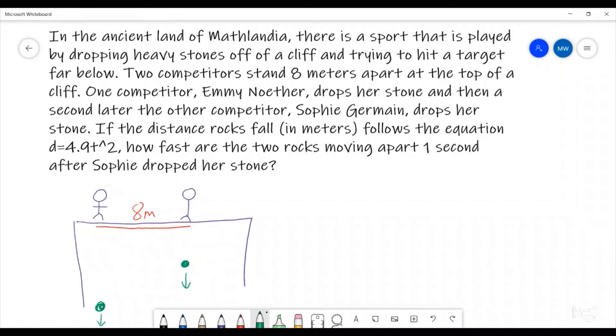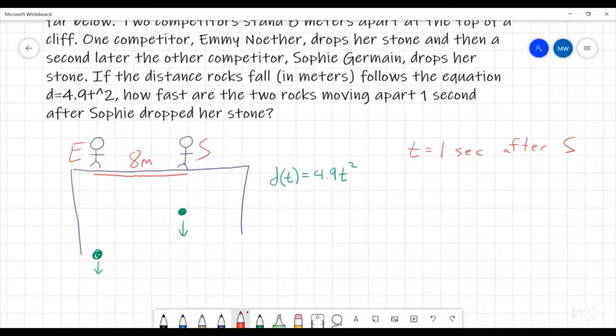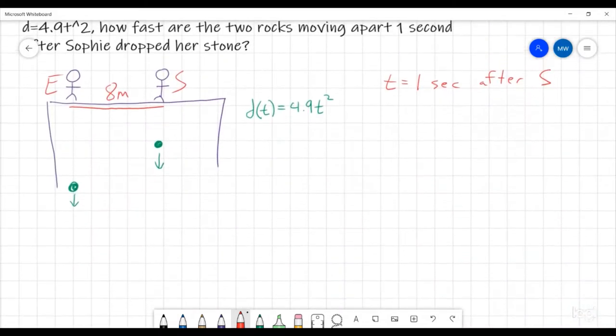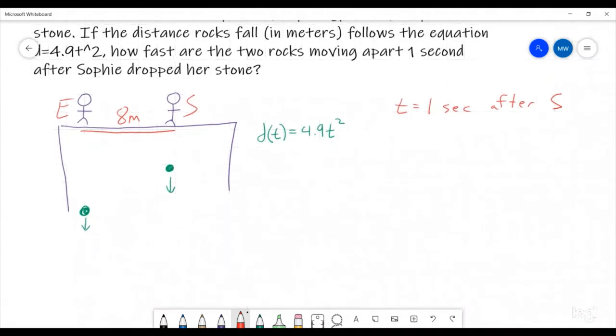The next one is we know that the distance as a function of time is going to be 4.9t². So that's going to be the distance that they're falling. And we know that the time t is 1 second after Sophie. So let's label them, Sophie has no arms. Okay, so here's Sophie, here's Emmy, and we are trying to figure out how far they have fallen. All right, so here we go. Let's go ahead and try and figure out this sort of relationship.